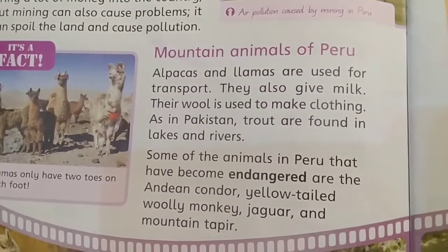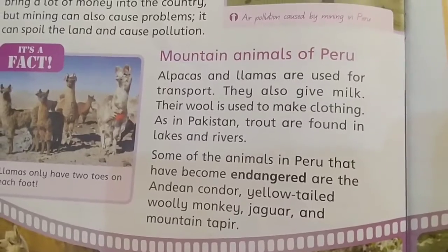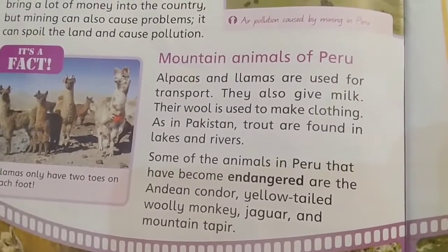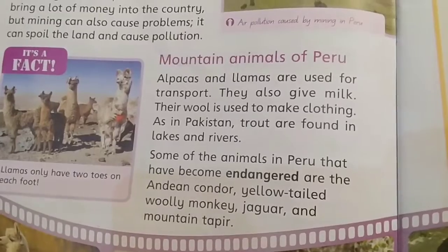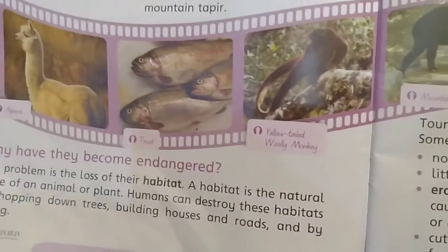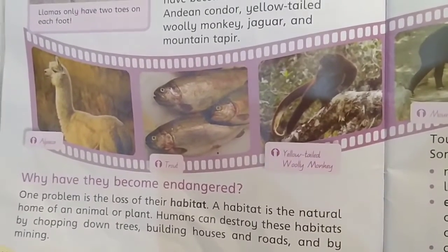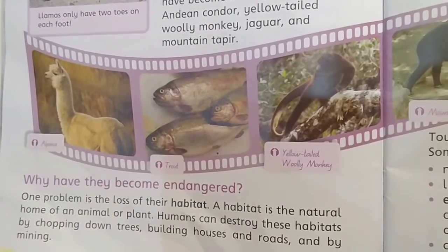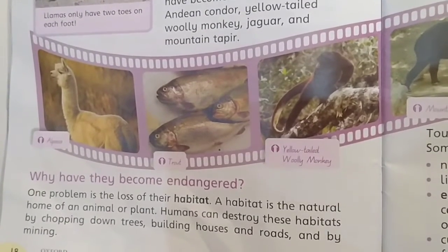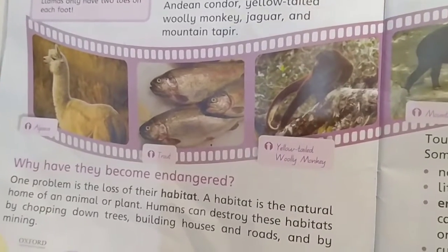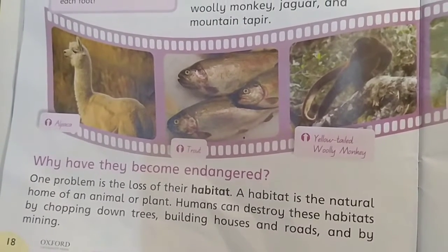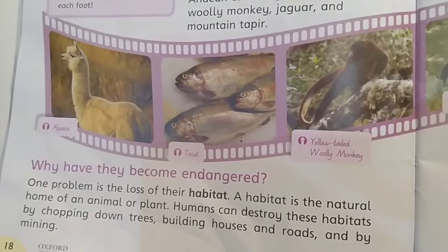What are the benefits of these animals? Alpacas and llamas are used for transport — they also give milk and wool. Wool is used to make clothing such as anoraks. Trout is a fish. Animals become endangered because they have lost their habitat. Habitat is the natural home of an animal — a place where something lives.